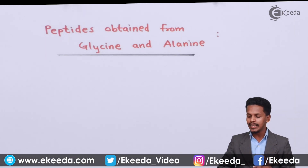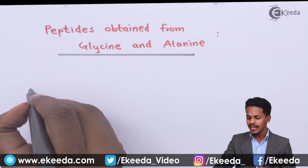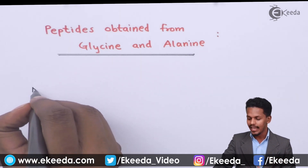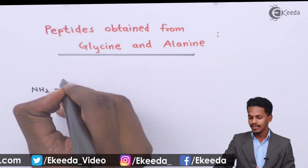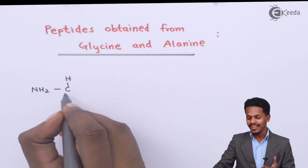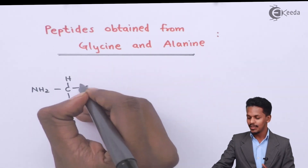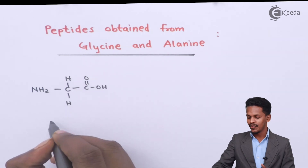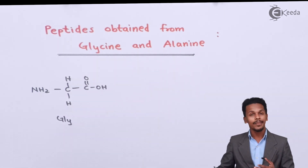If we talk about the preparation of a dipeptide from glycine itself — glycine has a formula that is NH2, CH2, C double bond O, OH. So this is glycine, or we could represent it by GLY.